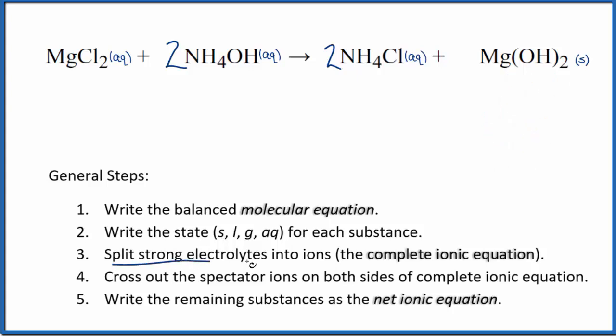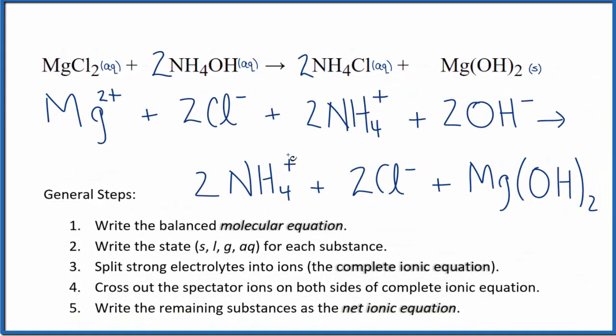Now we can split the strong electrolytes into ions for the complete ionic equation. And note that we don't split solids apart in net ionic equations. So that's going to look like this. So this is the complete ionic equation. At this point we can cross out spectator ions. They're on both sides. Note that we didn't split this MgOH2, this magnesium hydroxide apart because it's a solid. So everything else we split up.